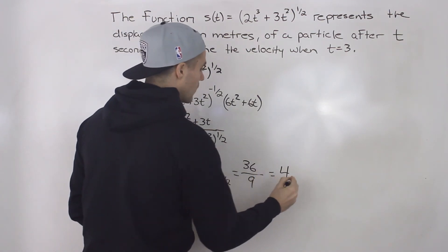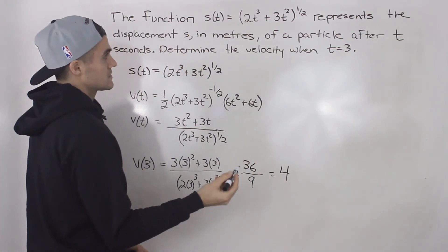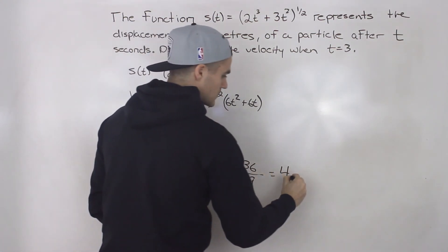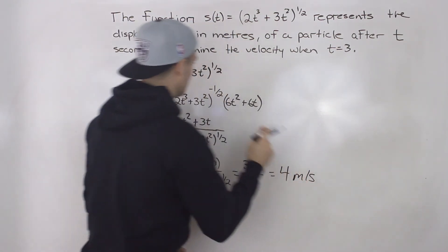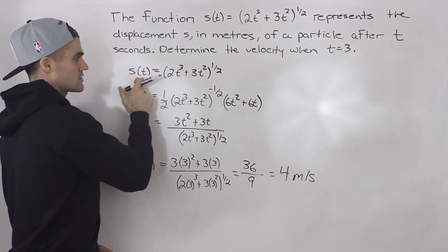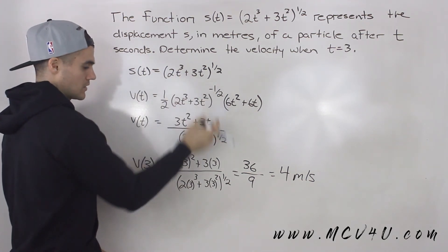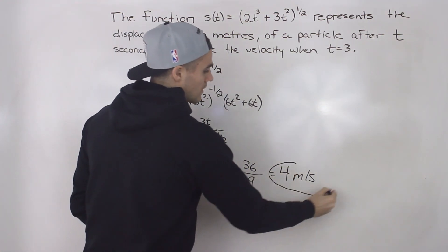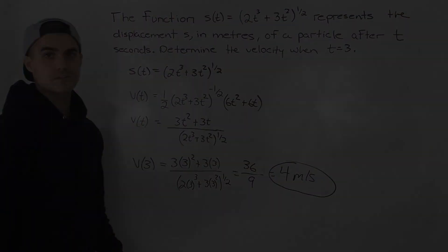And then the units are what? It's meters per second, because the displacement function was meters in terms of seconds, so we know that the velocity is going to be meters per second. So that there is your final answer.